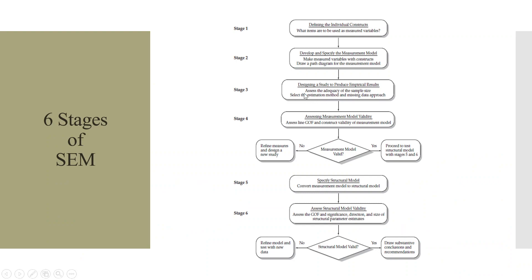The stages of SEM: Stage 1 — define the individual constructs and what items are to be used as measured variables. Stage 2 — develop and specify the measurement model. Stage 3 — design a study to produce empirical results. Stage 4 — assess the measurement model validity. If valid, proceed to test the structural model with Stages 5 and 6. If not valid, refine the measures and design a new study. Stage 5 — specify the structural model. Stage 6 — assess the structural model validity using goodness of fit and the significance, direction, and size of structural parameter estimates. If the structural model is valid, draw substantive conclusions and recommendations. If not valid, refine the model and test with new data.